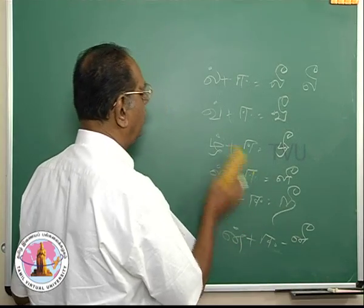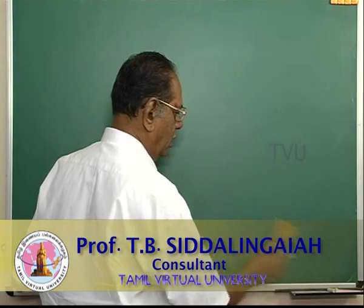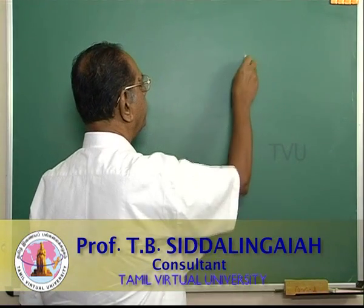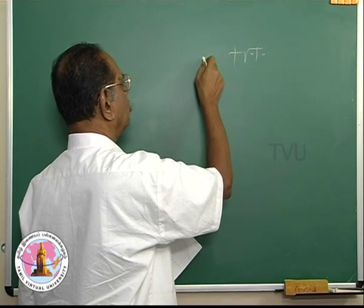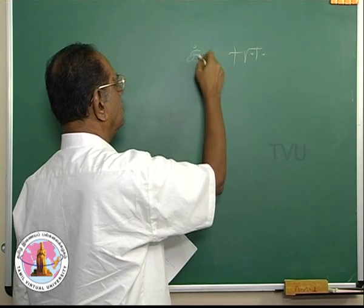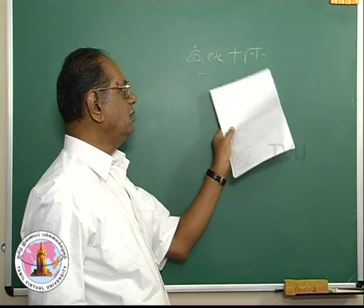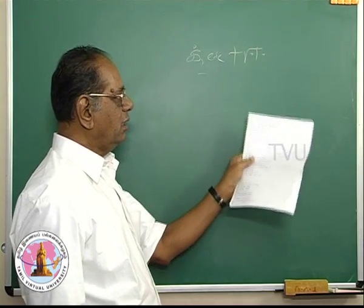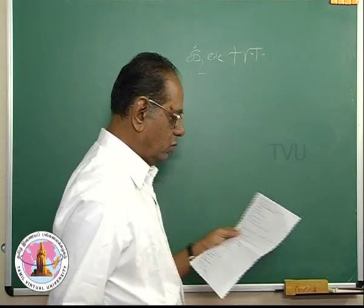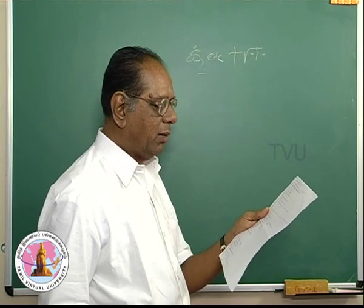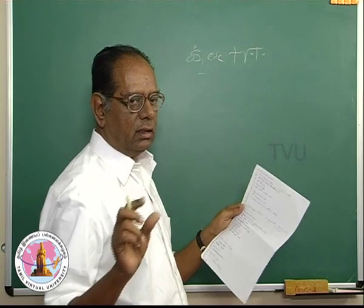So we have seen the combination of the vowel ee with the consonants, all the consonants that is ka etc. All the combinations with ee will be kee, ngee, chee, jee etc. We shall try to form a few words with the help of the newly learnt letters.